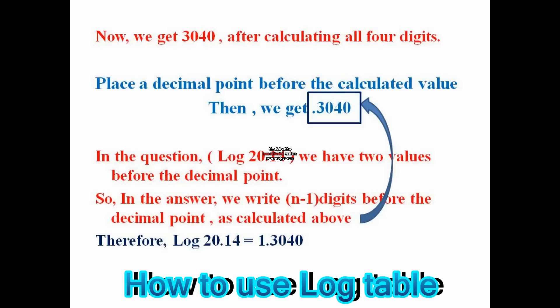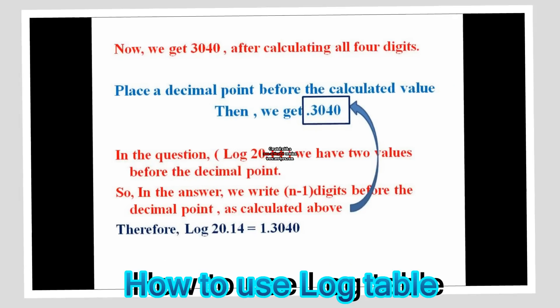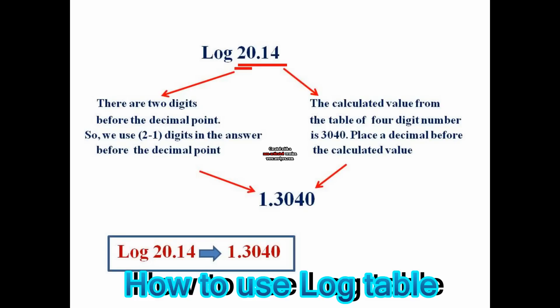According to the question, we have to find log 20.14. In this question, there are two digits before the decimal point. But in the answer, we only use n minus 1 digits before the decimal point. So the value becomes 1.3040. Therefore, the value of log 20.14 is 1.3040. The calculated value from the table for the 4-digit number is 3040; place a decimal point before it to get 0.3040, then apply n minus 1, giving 1.3040.